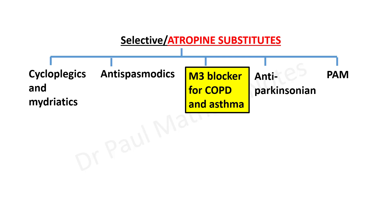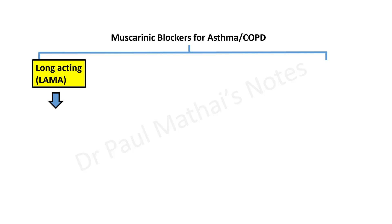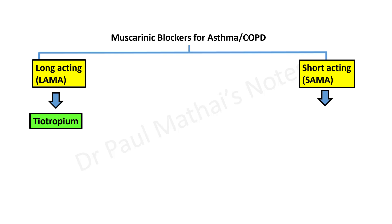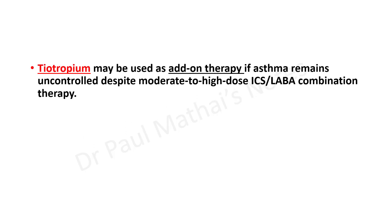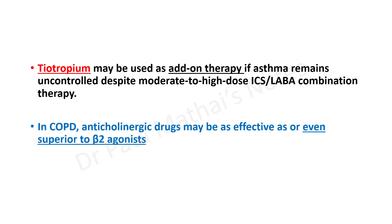M3 blockers are used for COPD and asthma — probably more effective for COPD than asthma. Long-acting muscarinic antagonists include tiotropium, and short-acting muscarinic antagonists include ipratropium and oxitropium. Tiotropium is useful as an add-on therapy when asthma patients remain uncontrolled despite moderate to high dose inhaled corticosteroid and long-acting beta-2 agonist combinations.